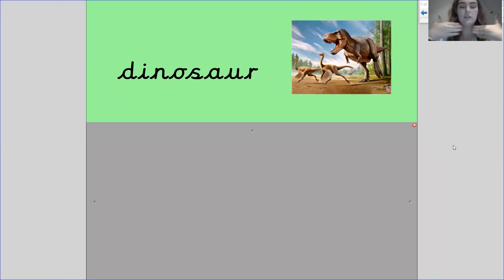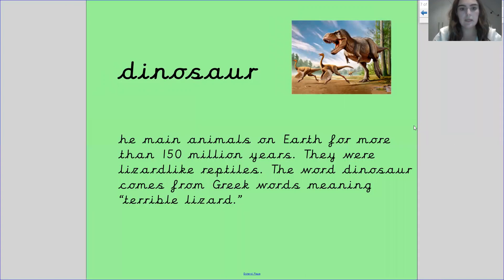Our next word is dinosaur. My turn, your turn. Dinosaur. Dinosaur. Dinosaur. The main animals on earth for more than 150 million years. They were lizard-like reptiles. The word dinosaur comes from Greek words meaning terrible lizard.